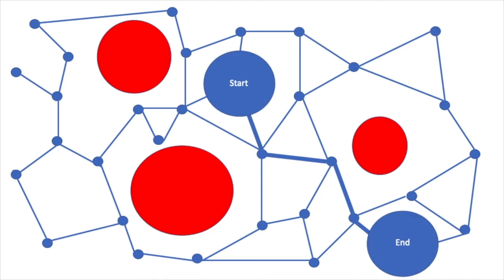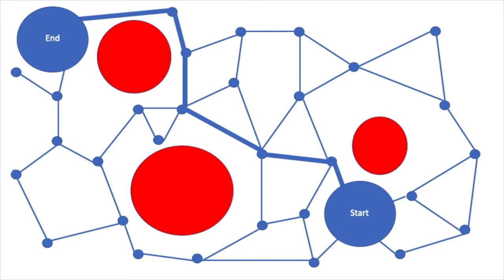One benefit of PRMs is that once a graph is constructed, it can be queried repeatedly for paths without having to construct a new graph.